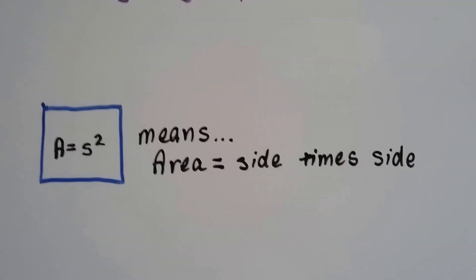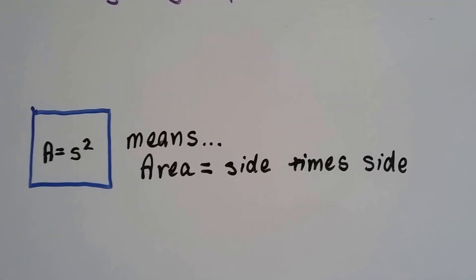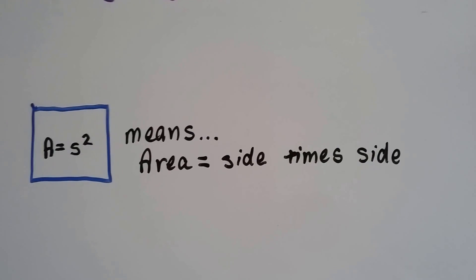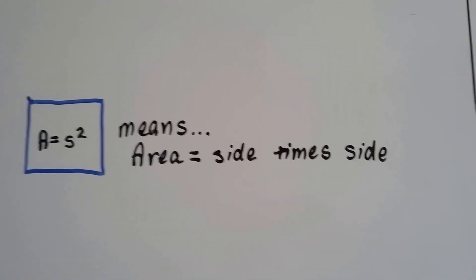When a number is multiplied to itself we say squared. So the area for this square would be A equals S with a little two exponent up here meaning side times side.